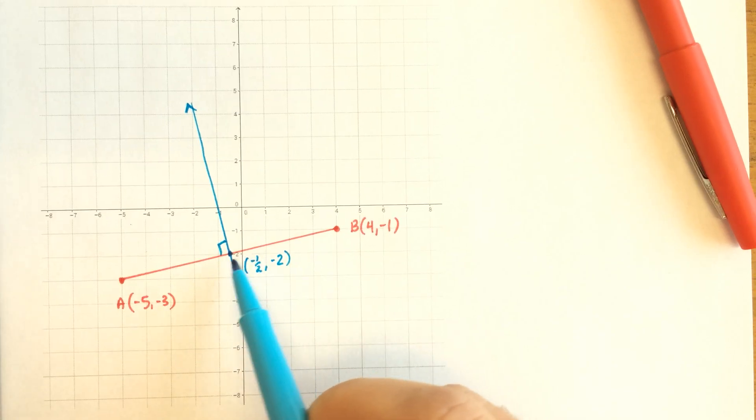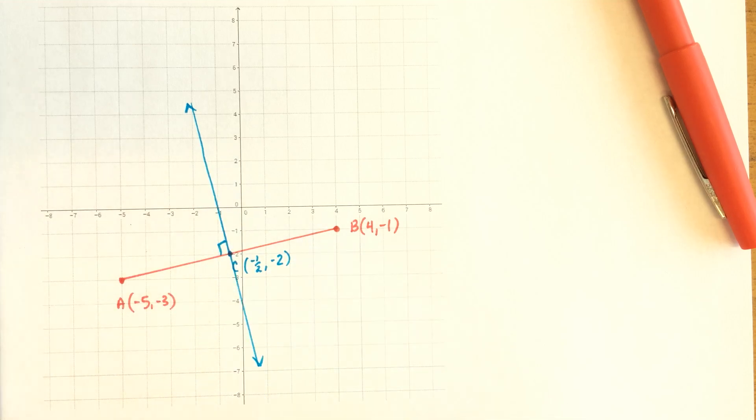And it has to go through the midpoint. It's right in the middle, so it bisects this segment. It cuts it in half. Bisecting cuts it in half. Perpendicular means it's at a 90 degree angle.